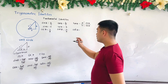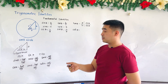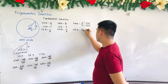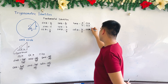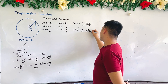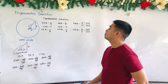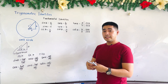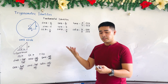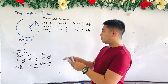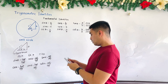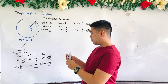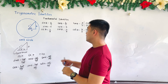And for cotangent, that is just the reciprocal. We can say that is B over A, which equals cosine theta over sine theta. So these are the fundamental identities, and from these fundamental identities we will be able to find the reciprocal identities.